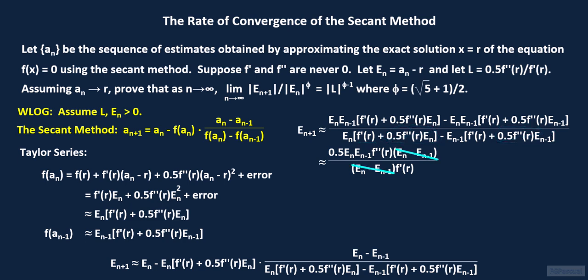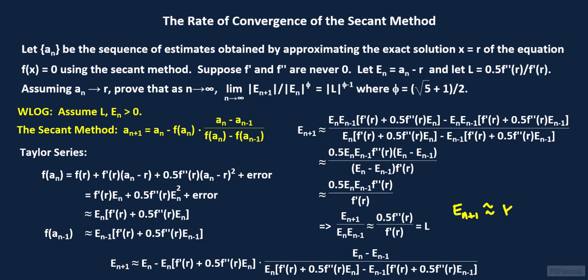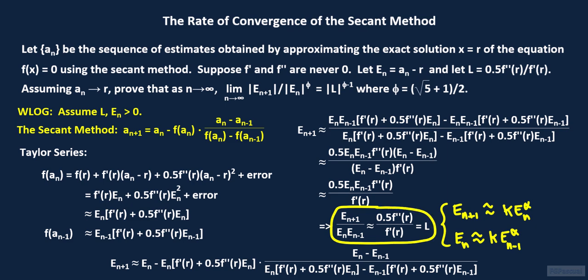The quantity e sub n minus e sub n minus 1 cancels out, so that for large values of n, e sub n plus 1 is approximately equal to l times e sub n times e sub n minus 1. That is, e sub n plus 1 divided by the quantity e sub n times e sub n minus 1 is approximately 0.5 times f double prime of r divided by f prime of r, which is the constant l. At this point, we mention an alternative derivation for the rate of convergence of the secant method. If we assume that e sub n plus 1 is approximately some constant k times e sub n raised to some exponent alpha, and similarly e sub n is approximately k times e sub n minus 1 raised to the same exponent alpha, then we can use this system of equations along with this equation to solve for alpha and k. We simply have to justify these assumptions.